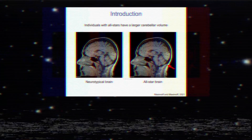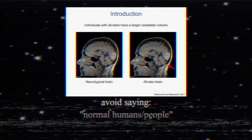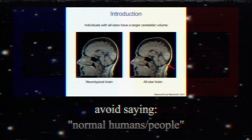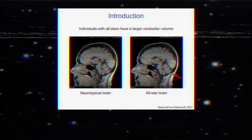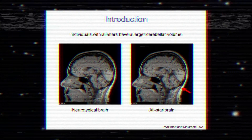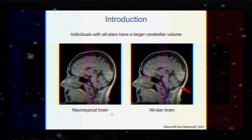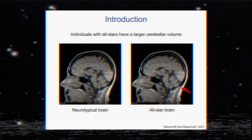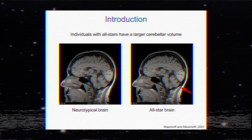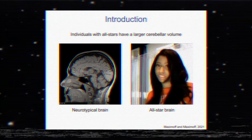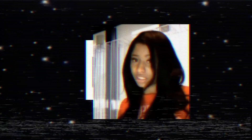When talking about human patients, refrain from saying 'normal humans' — instead say 'healthy.' Specifically for the brain, say 'neurotypical brain,' not 'normal brain.'